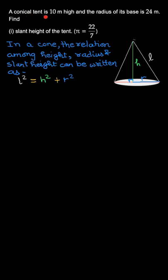Hi, the question says a conical tent is 10 meters high and the radius of its base is 24 meters. So this can be the shape of the conical tent. Height is known to us, 10 meters, and radius of base is known to us, 24 meters. We need to find the slant height of the tent.